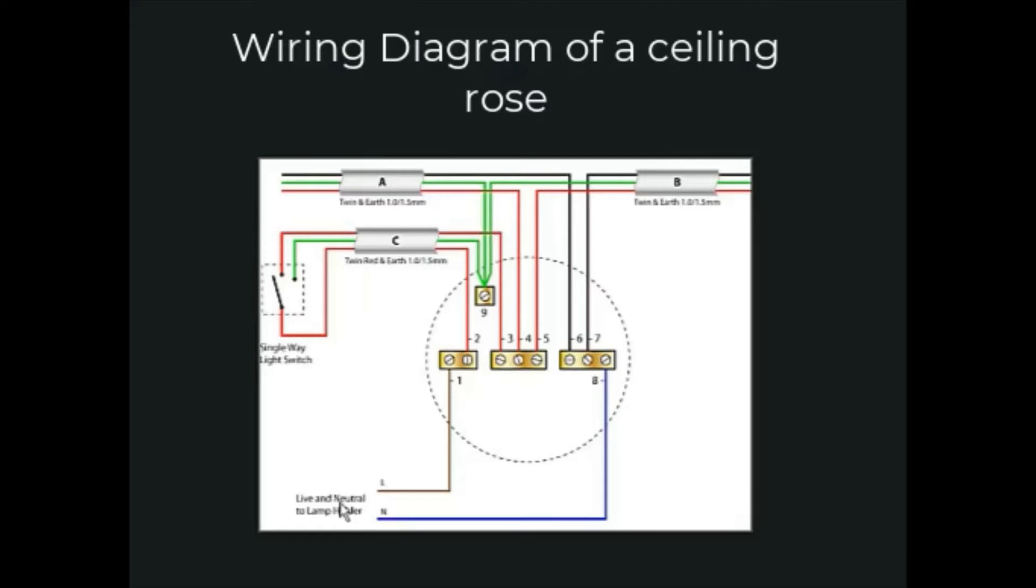The only wires you need to consider when replacing a light pendant are the blue and brown wires connected to terminals 1 and 8. If you wish to change the light to a bespoke light, then some light fittings can accommodate the ceiling rose and this can be left in place.